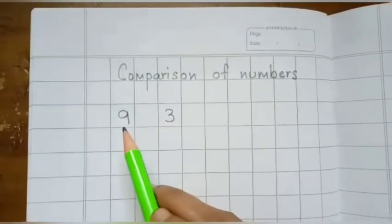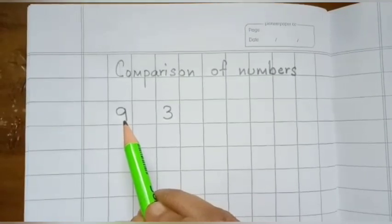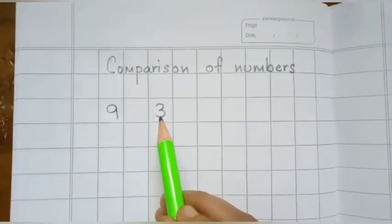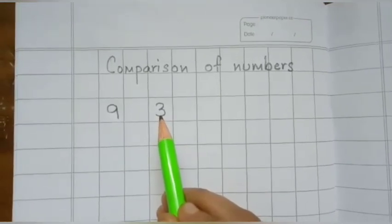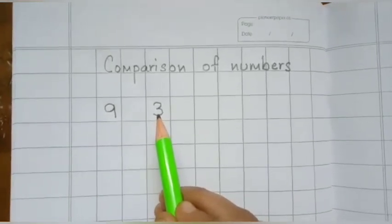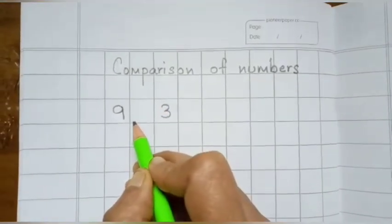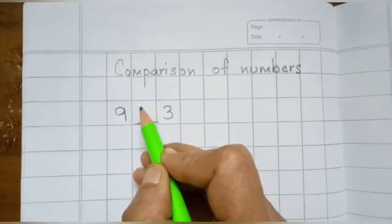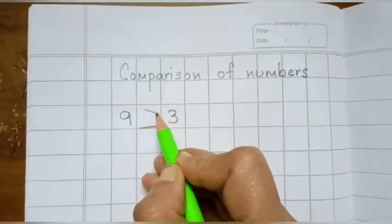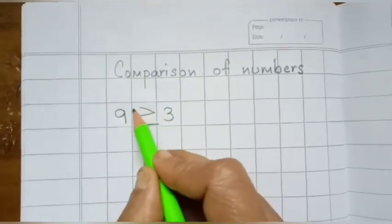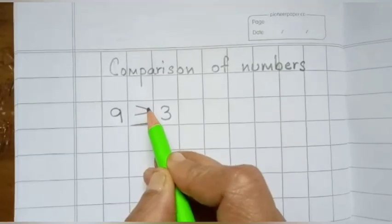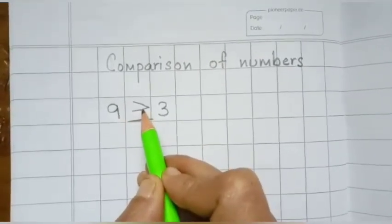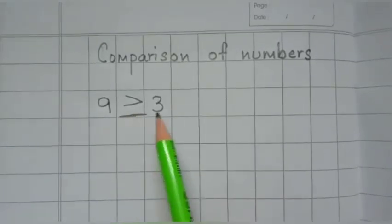Think of these numbers as the fishes. This is a big fish because 9 is the big number, and 3 is the small number, so this is the small fish. As I told you, the crocodile always used to open its mouth towards the big fish. So let us make the crocodile's mouth. This crocodile's mouth is open towards the big number. That means 9 is greater than 3. The number 9 is greater than number 3.